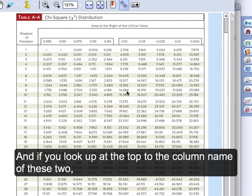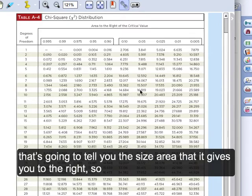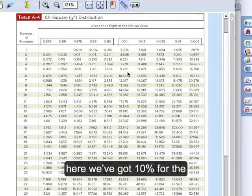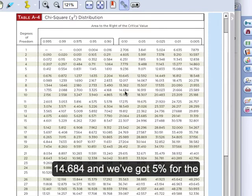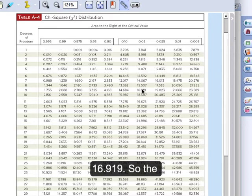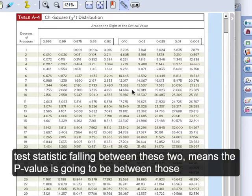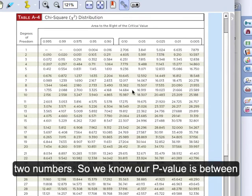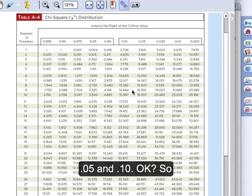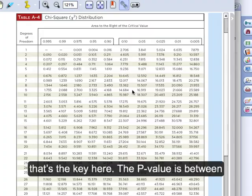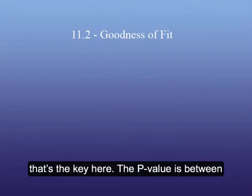And if you look up at the top to the column name of these two, that's going to tell you the size area that it gives you to the right. So here we've got 10% for the 14.684 and we've got 5% for the 16.919. So with our test statistic falling between these two, it means that the p-value is going to be between those two numbers. So we know from this that our p-value is between 0.05 and 0.1. Okay, so that's the key here. The p-value is between those two.